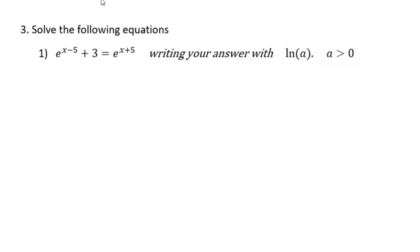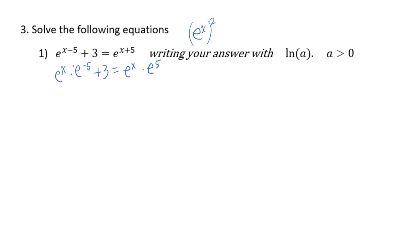For number 3, solve the following equations. Number 1: e to the (x minus 5) power plus 3 equals e to the (x plus 5) power. Write your answer with natural log, a greater than 0. We know this is not a quadratic pattern equation because we cannot create e to the x power squared. So we need to isolate e to the x power on one side. e^(x-5) means e^x times e^(-5), plus 3 equals e^x times e^5.